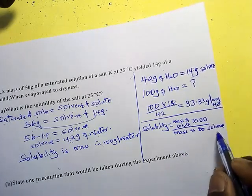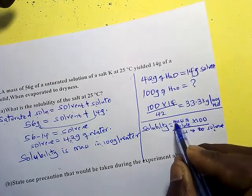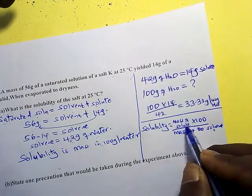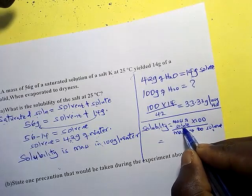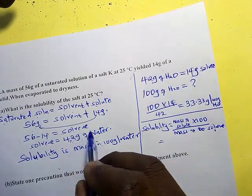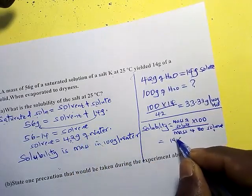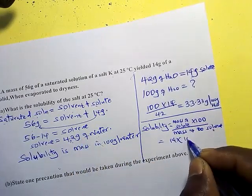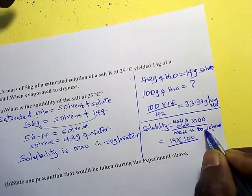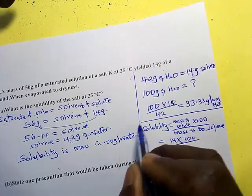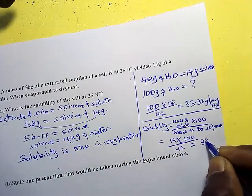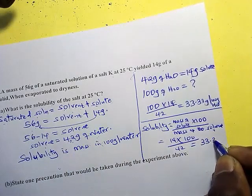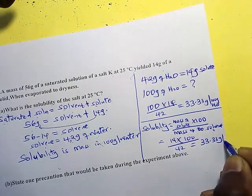You must find the mass of the solvent, then multiply the mass of the solute by 100 and divide by the mass of the solvent. In this case the mass of the solvent was 42, giving a solubility of 33.3 grams per 100 grams of water.